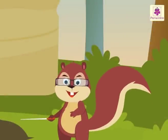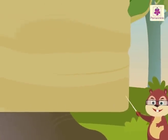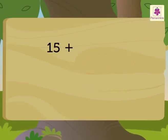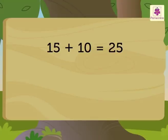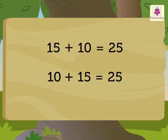Now, let us try to find out two addition and two subtraction facts for a few examples. 15 plus 10: first, let us add. 15 plus 10 is equal to 25. Now, let us change the order of the addends. 10 plus 15 is equal to 25.